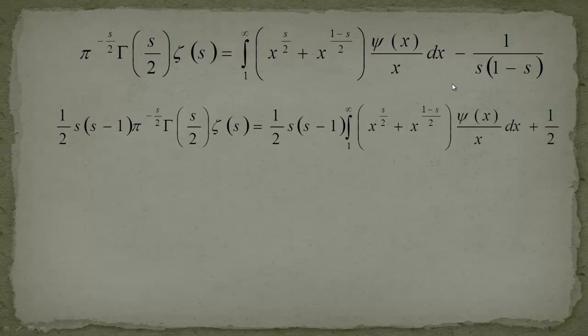And he multiplied this whole expression with 1/2 s then this bracket s minus 1. This left hand side doesn't change by multiplying with 1/2 s multiplied with s minus 1. And the right hand side, this guy here in the back will become plus 1/2.